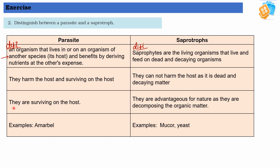As a third point: parasites survive on the host, whereas saprotrophs are advantageous for nature as they decompose organic matter, helping us by clearing organic material from the land. Examples: Amarbel is an example of a parasite, and Mucor, yeast, or fungus are examples of saprotrophs.